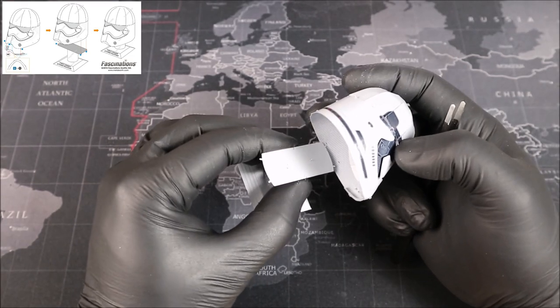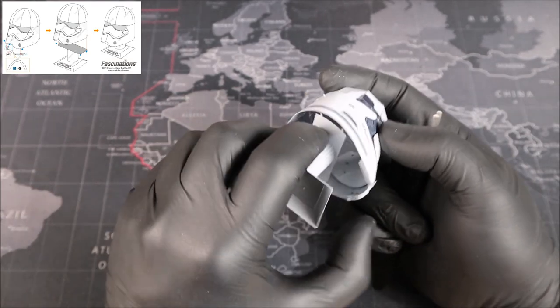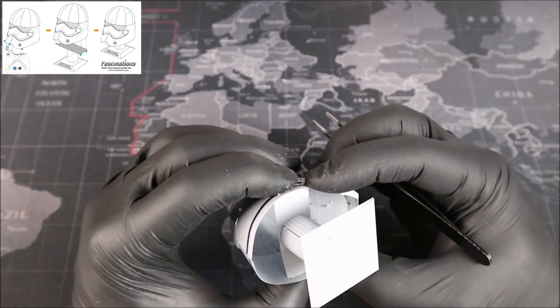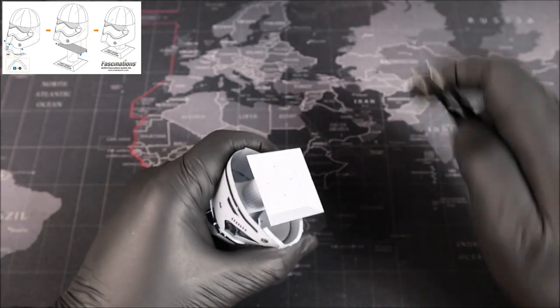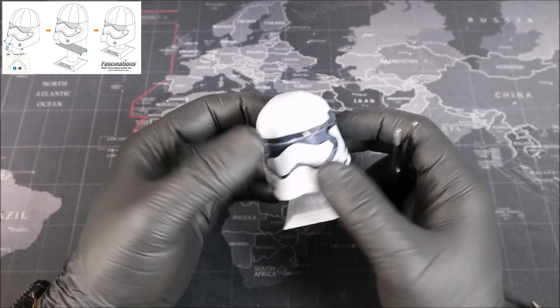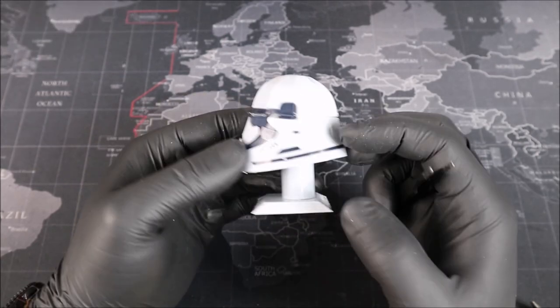That looks pretty good. Lastly, we just need to attach our stand now. It's a matter of placing these tabs in the right area. And there we go, our Stormtrooper helmet.